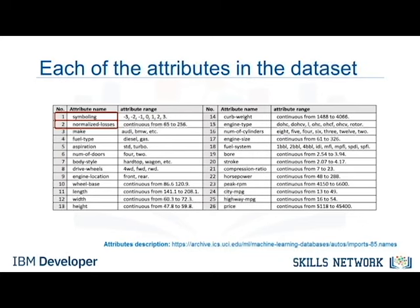The second attribute, normalized losses, is the relative average loss payment per insured vehicle year. This value is normalized for all autos within a particular size classification — two-door small, station wagons, sports specialty, etc. — and represents the average loss per car per year. The value ranges from 65 to 256. The other attributes are easy to understand; if you'd like more details, refer to the link at the bottom of the slide.